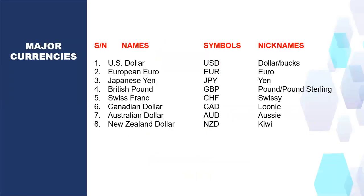Last class, we stopped at major currency pairs. We mentioned that these eight currencies are what we refer to as major currency pairs because they belong to major economies. There are eight in number: the US dollar, the European euro, the Japanese yen, the British pound, the Swiss franc, the Canadian dollar, the Australian dollar, and the New Zealand dollar. We gave the symbols and talked about their nicknames as well, so you can refer to the previous class.